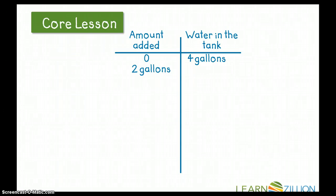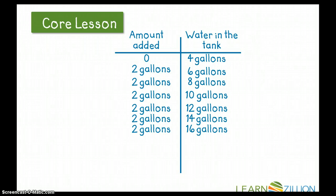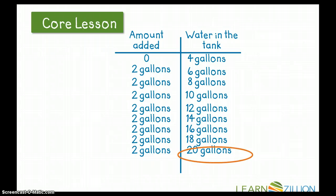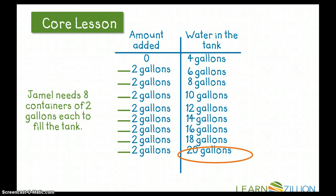I add two gallons because I'm adding the water with a two-gallon container, and now I have six gallons because four plus two is six. Then I add two more gallons and I have eight gallons altogether. I add two more gallons and I have ten gallons, and so on. I know I want to get to 20 gallons because it's a 20-gallon tank and Jamel is filling up his entire tank. Once I get to 20 gallons, I need to count how many times I added two gallons: one, two, three, four, five, six, seven, eight. Jamel needs eight containers of two gallons each to fill the tank.